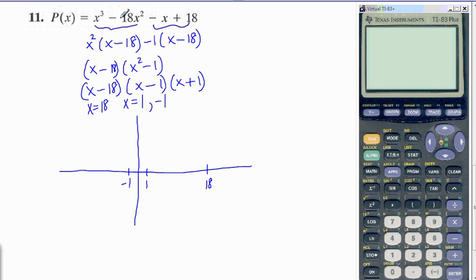And when you let X equal to 0, you get a Y intercept at 18. So these are our X intercepts and Y intercepts. And Y intercept is P of 0, which is 18. So that's up here.